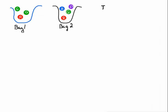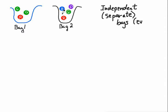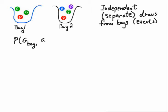Let's do the same bags of marbles, independent again. What happens in this bag and what happens in this bag — neither bag knows what happened. We're going to do independent, separate draws from two separate bags. So the probability of a green in bag one and a blue in bag two — let's switch it up a bit.